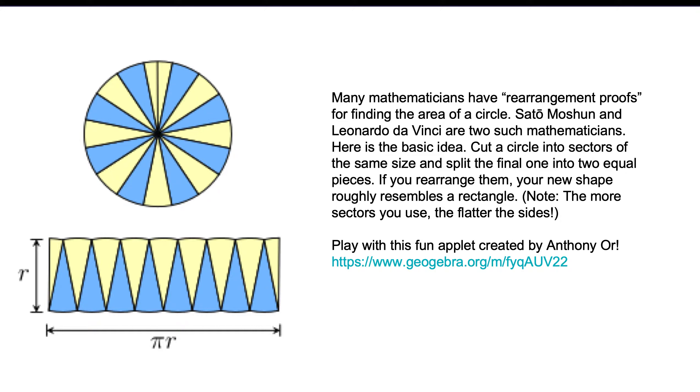If you cut a circle into sectors—sectors are kind of like pizza slices—of the same size, and you split the final one, the final little piece at the top, into two equal pieces, and you rearrange them, your new shape roughly resembles a rectangle. The more sectors you use, the flatter the top and bottom of this rectangle will be.